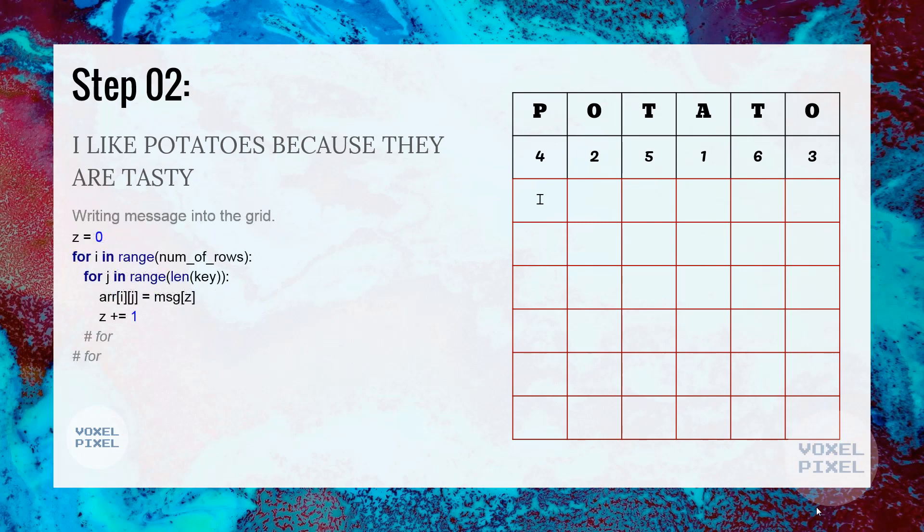Next, we will write our plain text into the grid letter by letter. Since first letter is the I, we will put it first, then followed by L, then I, then K and then E. We will keep on adding our entire plain text message into the grid letter by letter until entire grid is filled. As you can see, there are still empty places inside the grid, so we will add dummy characters.